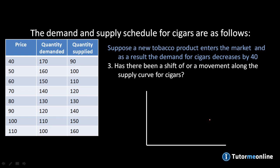Now suppose a new tobacco product enters the market and as a result the demand for cigars decreases by 40. Has there been a shift of, or a movement along, the supply curve for cigars? We start off by indicating the original positions: demand D0, our supply curve S0, and our original equilibrium point.